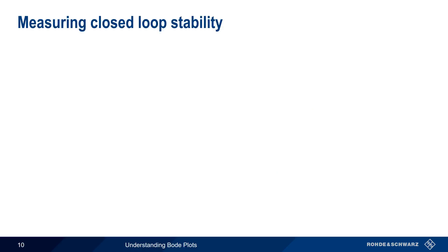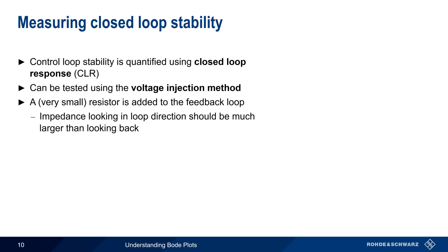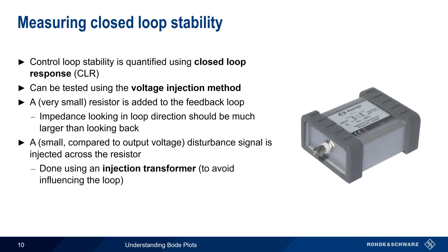We measure closed loop stability by determining the closed loop response, which can be tested using the voltage injection method. In a nutshell, this method adds a very small resistor, usually on the order of 10 ohms or so, into the feedback loop. A point should be chosen such that the impedance looking in the direction of the feedback loop is much larger than the impedance looking backwards. A small disturbance signal is then injected across this resistor. This is normally done using a so-called injection transformer so as to avoid influencing the loop. The response is then measured and Bode plots are generated.